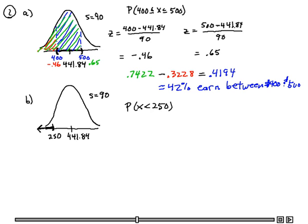Again, I need the area under the density function above the interval. In this case, that's pretty easy. All I have to do is get a Z-score for 250. I'll subtract the 441.84 and divide by the 90. And I get a negative 2.13.